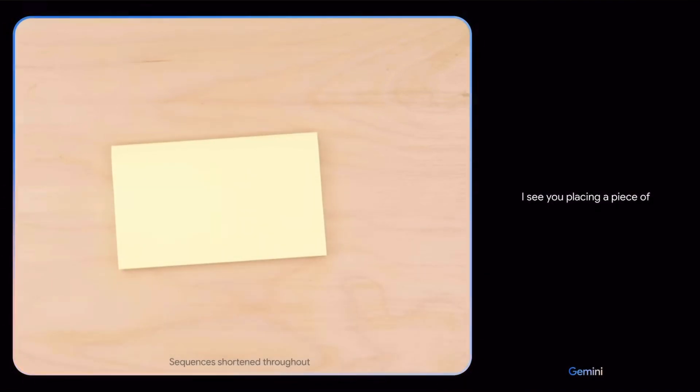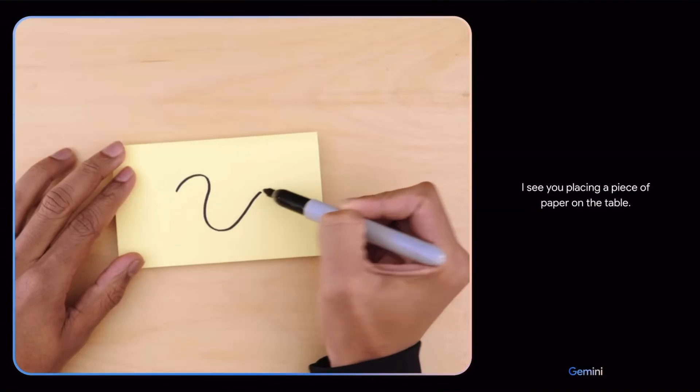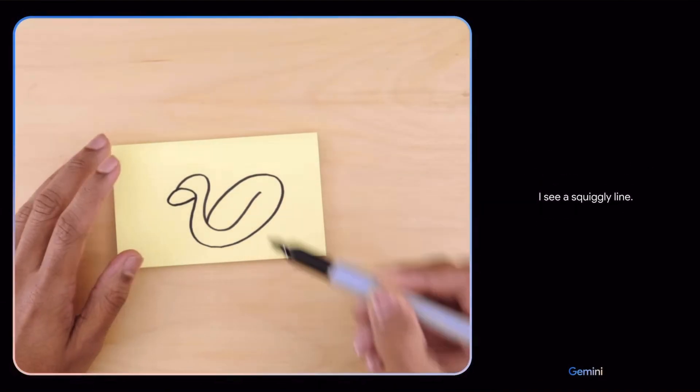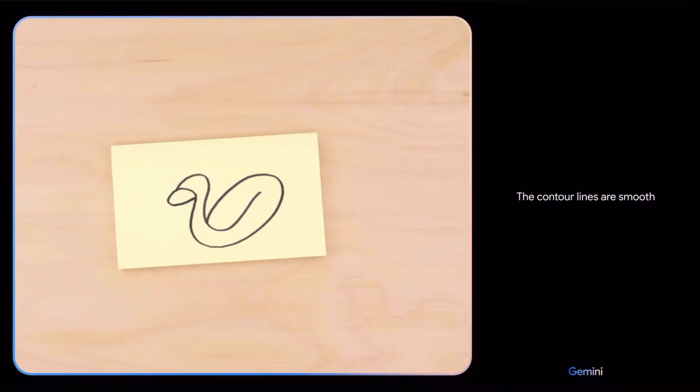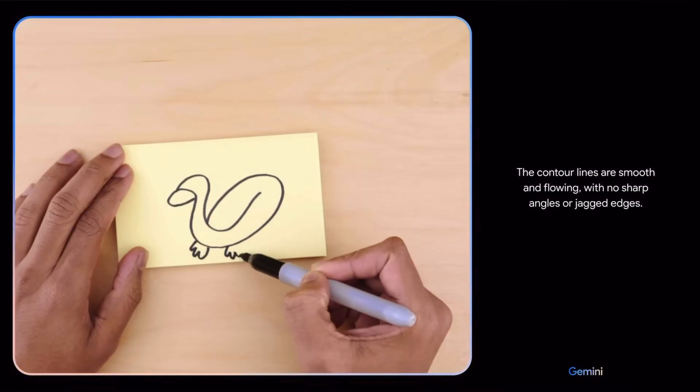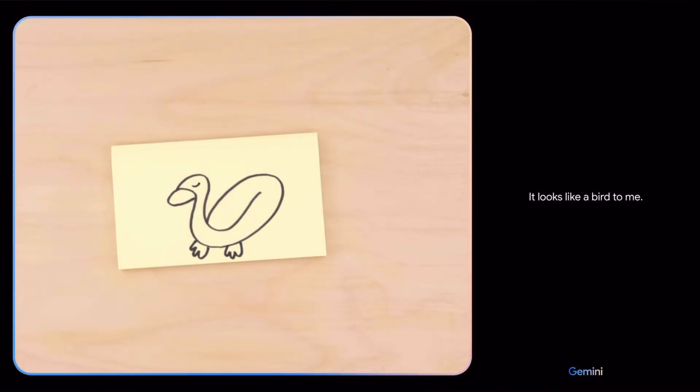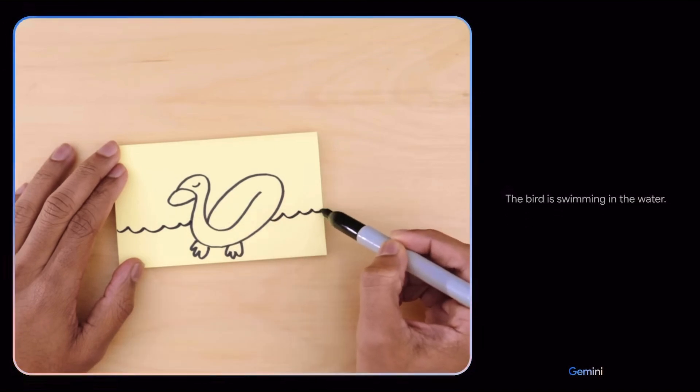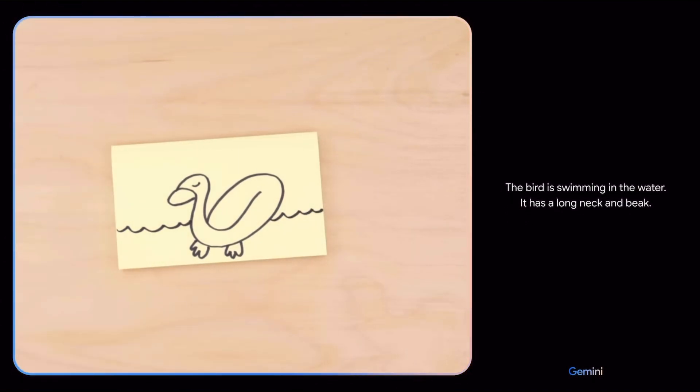I see you placing a piece of paper on the table. I see a squiggly line. What about now? The contour lines are smooth and flowing, with no sharp angles or jagged edges. It looks like a bird to me. What if I add this? The bird is swimming in the water. It has a long neck and beak. It is a duck. Yes!